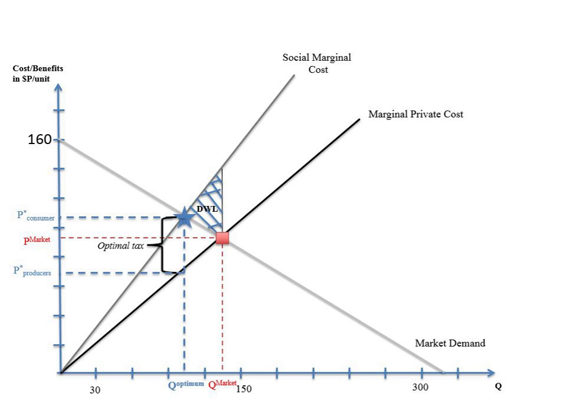Private costs are the direct costs of the producer to produce the good or service. Social cost includes these private costs, and in addition the costs associated with the production of the good which are not dealt with by the free market.